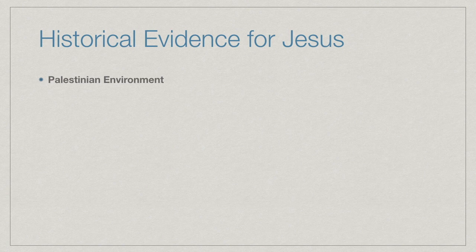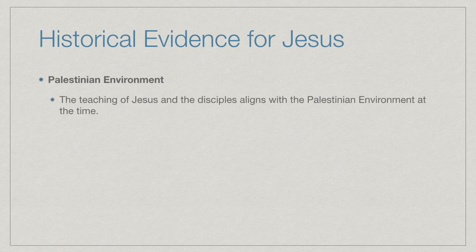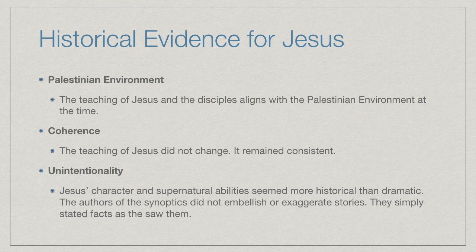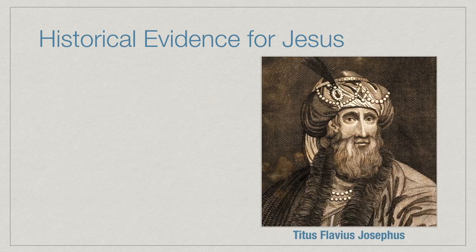Palestinian environment: the teaching of Jesus and the disciples aligns with the Palestinian environment of that time. Coherence: the teaching of Jesus did not change or evolve throughout his ministry — it remained consistent. Unintentionality: Jesus's character and supernatural abilities seem more historical than dramatic. The authors of the synoptic Gospels did not embellish or exaggerate stories — they simply stated facts as they saw them, in a descriptive rather than prescriptive way.